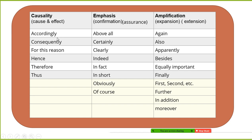Remember: you should put a comma after each transition word if you start your sentence with it or use it in the middle. Now, when you want to emphasize — to assure or confirm what you have said — use: above all, certainly, clearly, indeed, in fact, in short, obviously, of course.